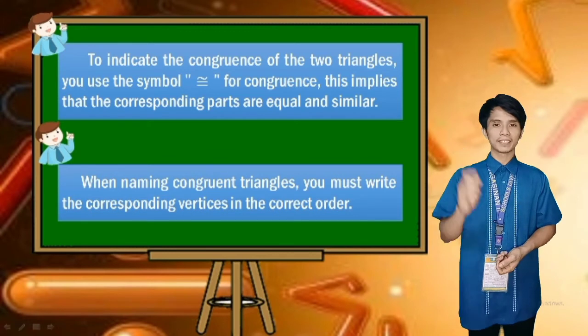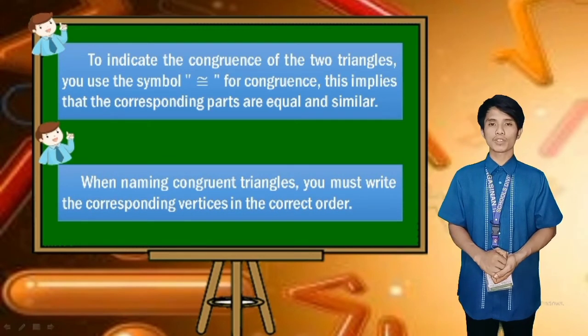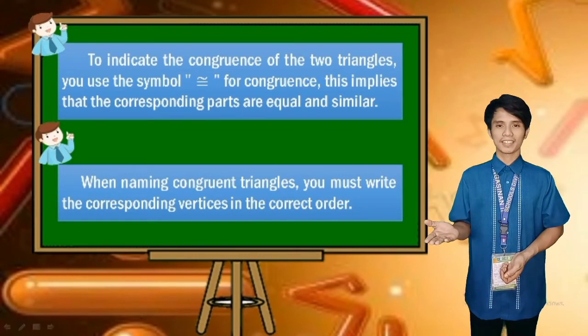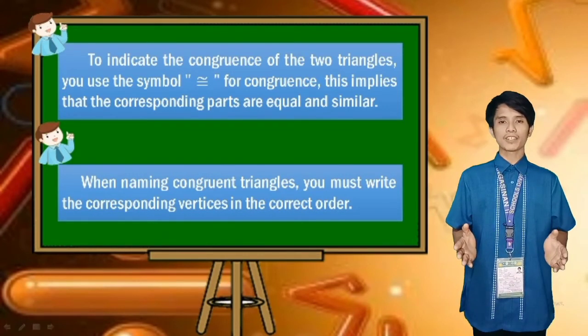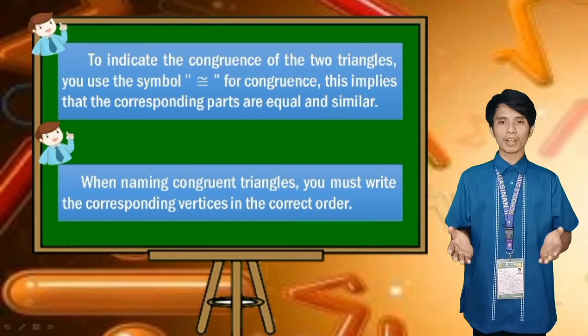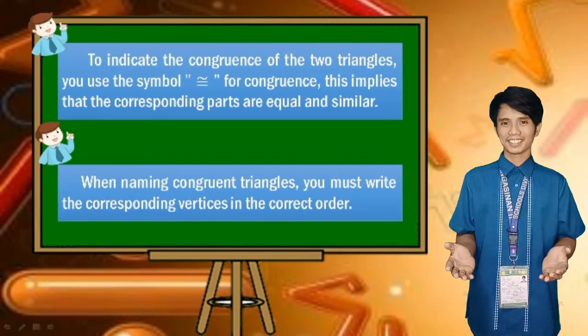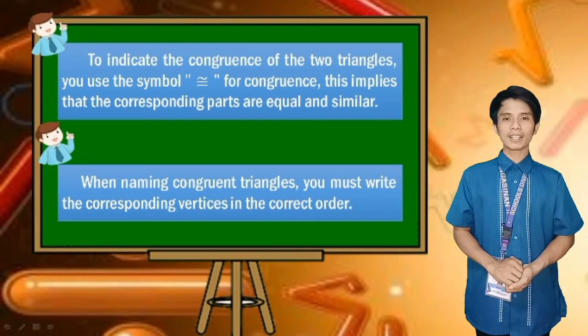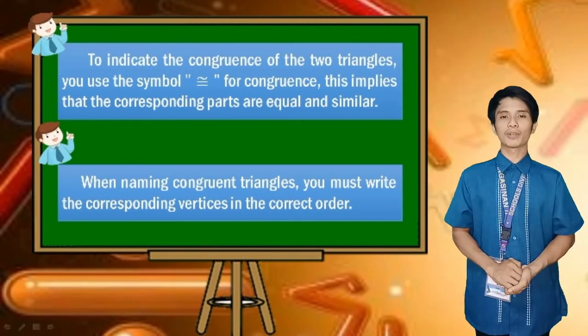Remember, to indicate the congruence of two triangles, use this symbol to indicate congruence. This implies that the corresponding parts are equal and similar. When naming congruent triangles, you must write the corresponding vertices in correct order.